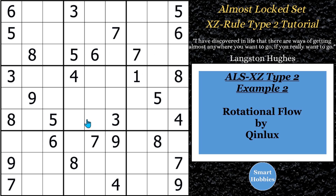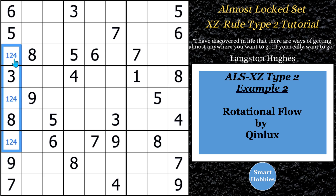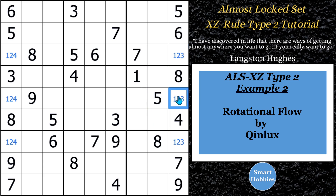For our next example, this is a puzzle I've solved before — Rotational Flow by KeenLux. Awesome puzzle. I'll put a link to it at the end. It's a great solve and I do use an almost lock set; that's the intended logic. This is an almost lock set type two, and what's nice is when a setter like KeenLux makes a puzzle, they telegraph where they want you to look. Column one and column nine are kind of screaming out at you because the cells that are missing are in the same rows — rows three, five, and seven. You got a one, two, four missing on one side and one, two, three missing on the other. There's a one right there, so you can eliminate this one.